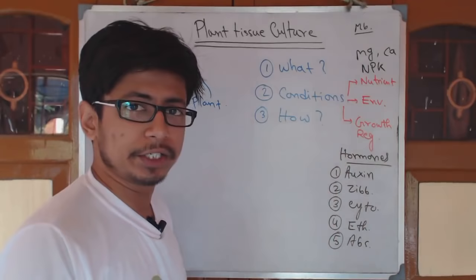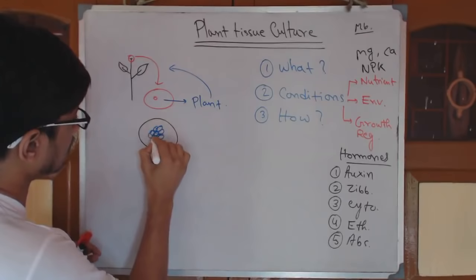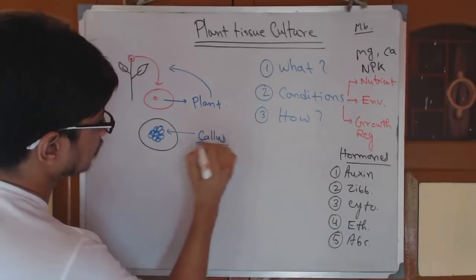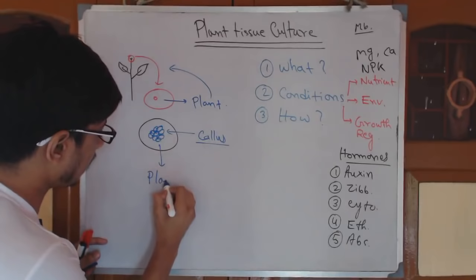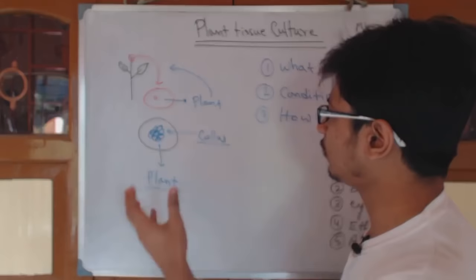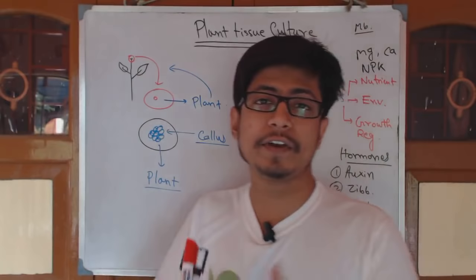Once the cell starts dividing rapidly, it will give us a mass of cells. From one cell, it keeps dividing and gives a chunk of cells — that mass of cells is known as callus. Once the callus is formed, it can give rise to a complete, small but fully functional plant. In some cases we don't require callus formation, but in most cases they go through this callus stage — an undifferentiated mass of plant cells, just like a ball of cells similar to a tumor.